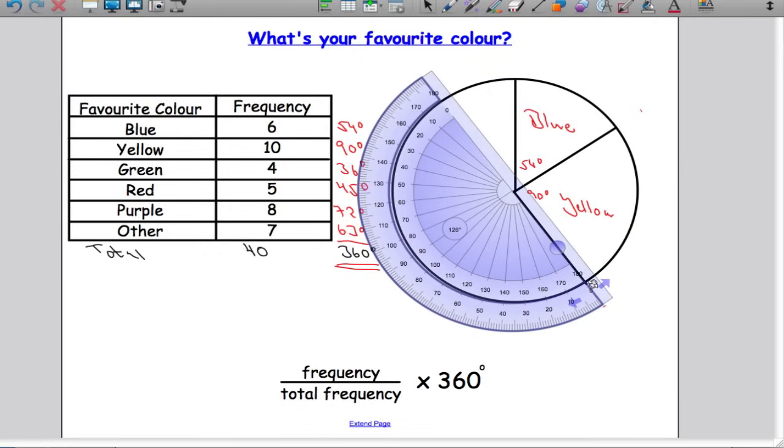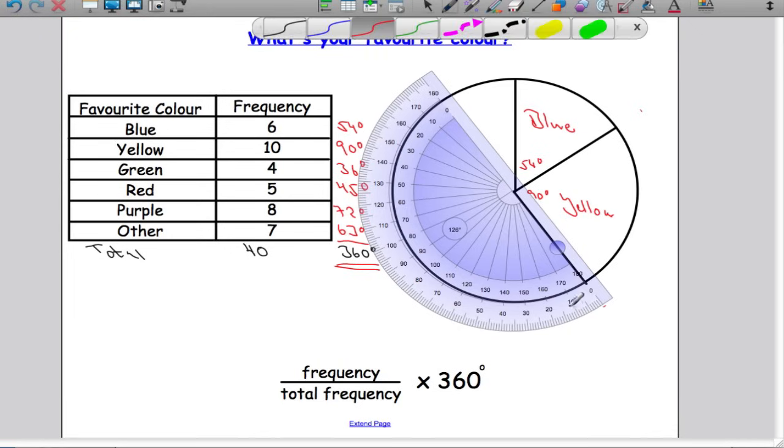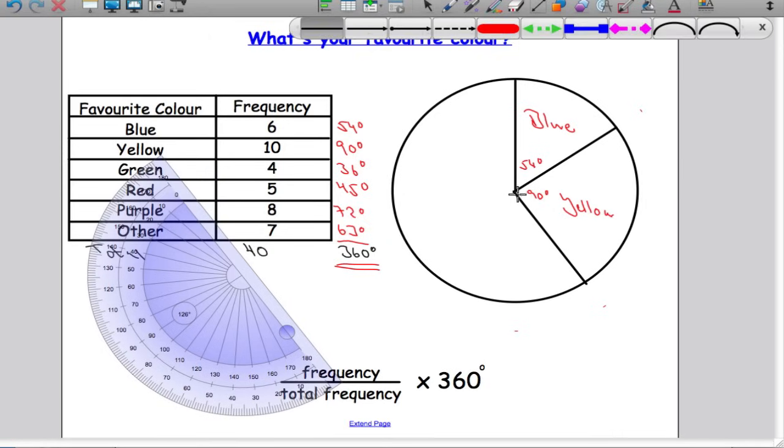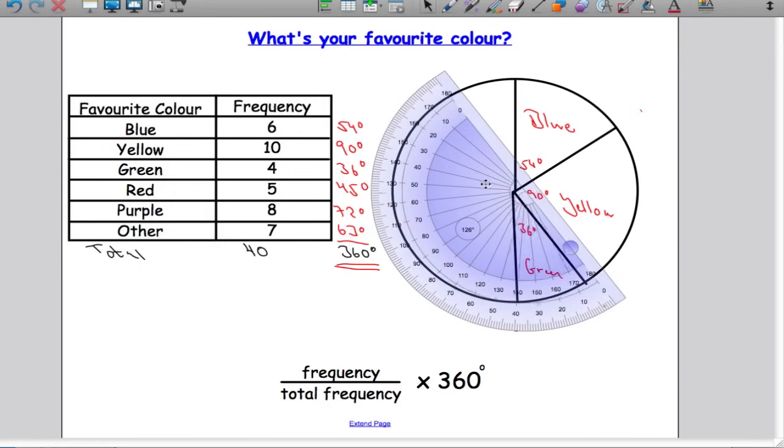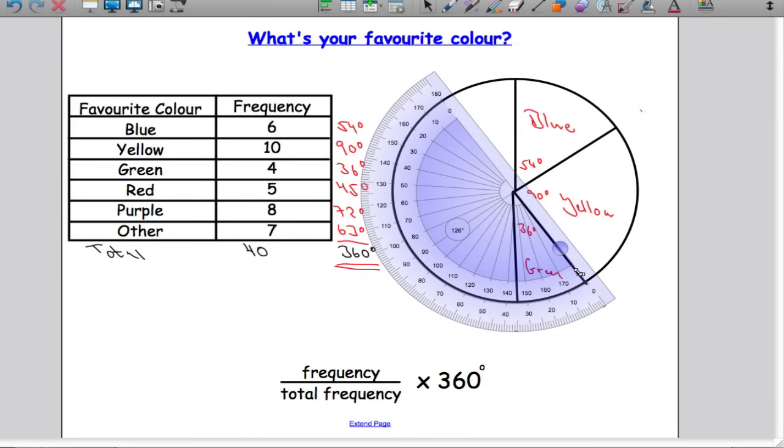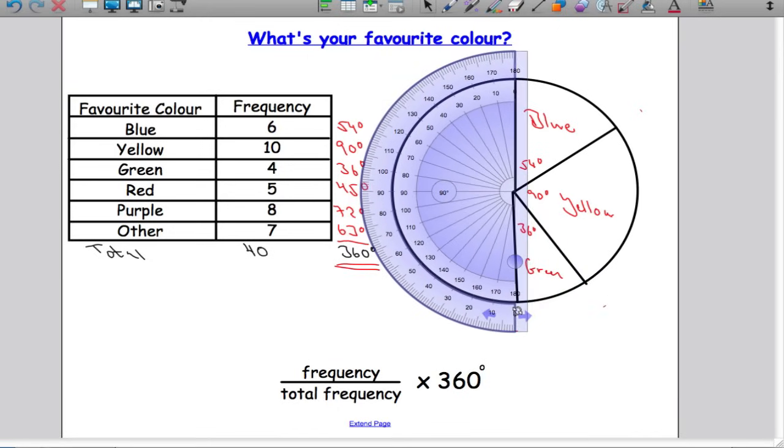Green: 36 degrees. Take your protractor, put it in the center of your pie chart, move it around so that we're measuring from zero. We need 36 degrees, so I'm going to go to 36 which is right there. Make a little mark and draw in your line. Labeling appropriately, 36 degrees, and that is green.